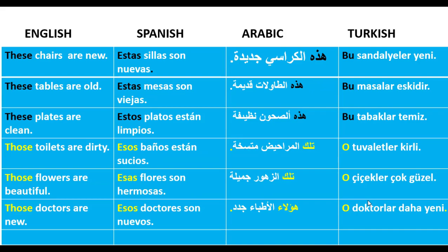'These chairs are new' — Spanish: 'Estas sillas son nuevas' — Arabic: 'Hadhihi al-karasi jadidah' — Turkish: 'Bu sandalyeler yeni.' 'These tables are old' — Spanish: 'Estas mesas son viejas' — Arabic: 'Hadhihi al-tawilah qadimah' — Turkish: 'Bu masalar eski.' 'These plates are clean' — Spanish: 'Estos platos están limpios' — Arabic: 'Hadhihi as-suhun nadhifah' — Turkish: 'Bu tabaklar temiz.'